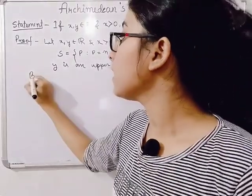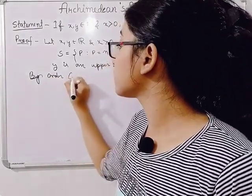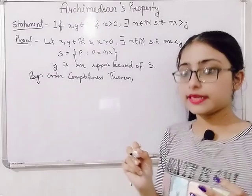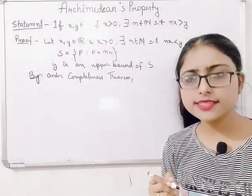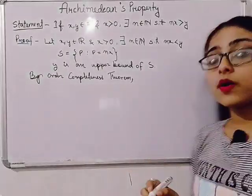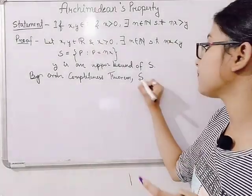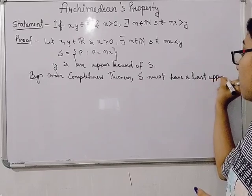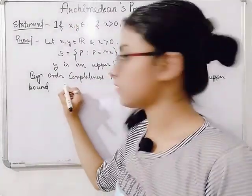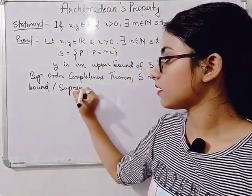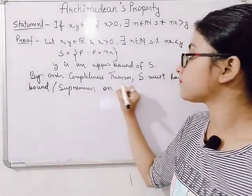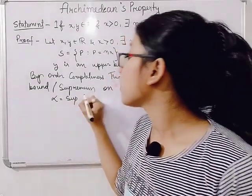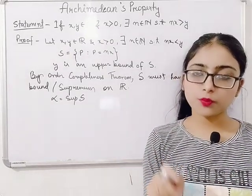Now, by the order completeness theorem, we have that S must have a least upper bound — that is, a supremum — on ℝ. So we can write that S must have a supremum on ℝ. Now we will define alpha. Let alpha be equal to the supremum of S.